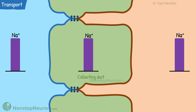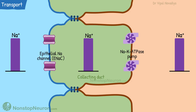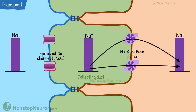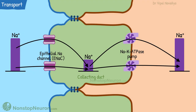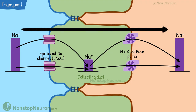Let's understand this with an example of reabsorption of sodium at the collecting duct. It contains the sodium-potassium ATPase pump on the basolateral side and epithelial sodium channels on the luminal side. The sodium-potassium ATPase pump actively moves sodium from the cell into the interstitium, which decreases sodium concentration inside the cell. This creates a gradient for sodium entry across the luminal membrane, and sodium diffuses down this gradient. This ongoing process results in a net movement of sodium from the lumen into the interstitium.